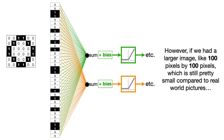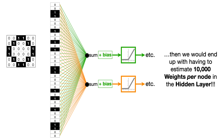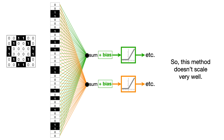However, usually the first hidden layer has more than one node, and each additional node adds an additional 36 weights that we need to estimate. If we had a larger image, like 100 pixels by 100 pixels — which is still pretty small compared to real-world pictures — then we would end up having to estimate 10,000 weights per node in the hidden layer. So this method doesn't scale very well.